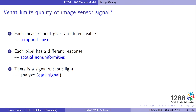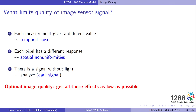It is obvious of course that to get an optimal image quality, all these effects — temporal noise, spatial non-uniformities, and the dark signal — should be as low as possible.